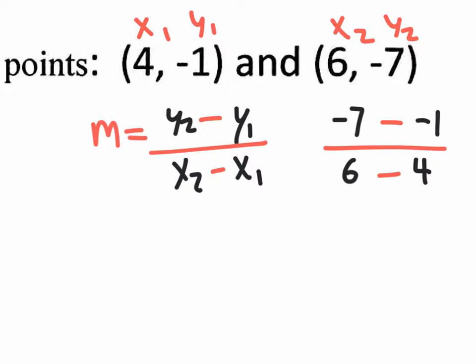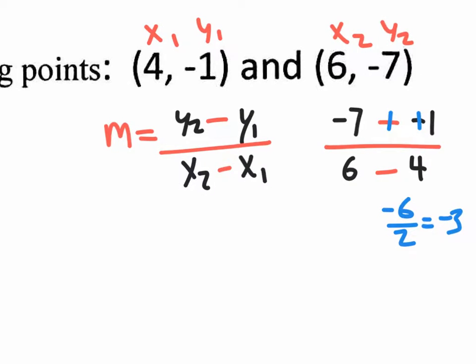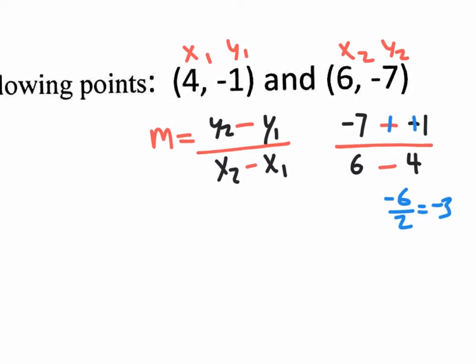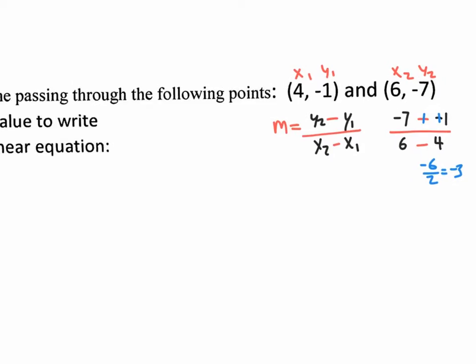When we work this out, the minus minus changes to plus plus, and we end up with negative seven plus one, which is negative six on top. On the bottom, six take away four is two, which means our slope is negative three.